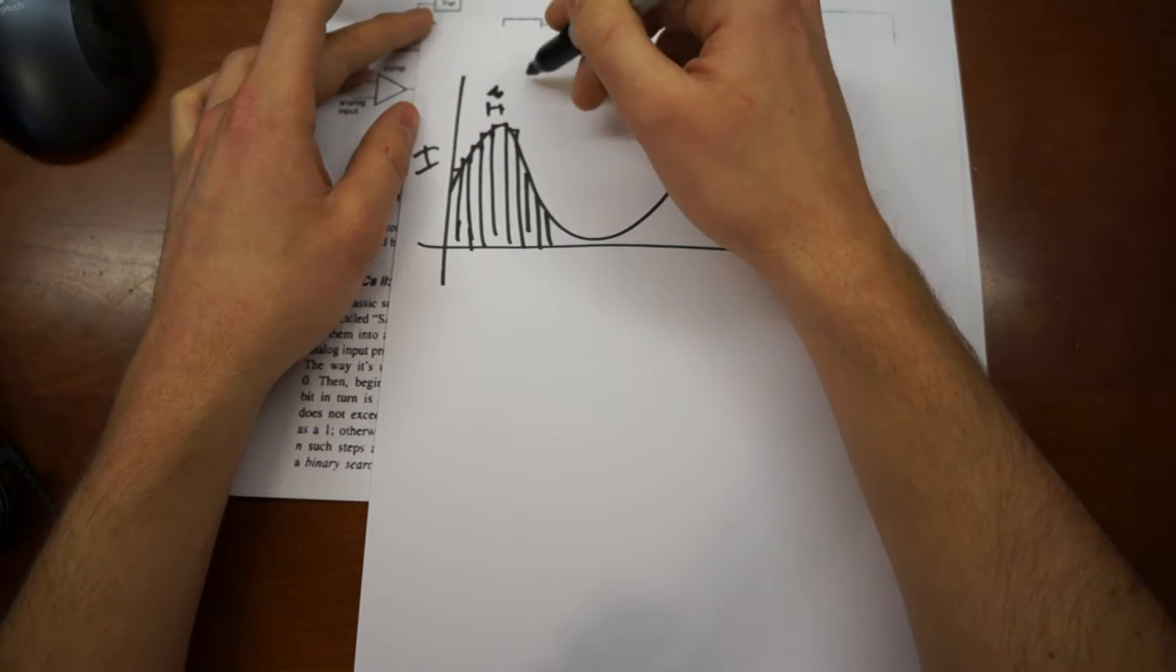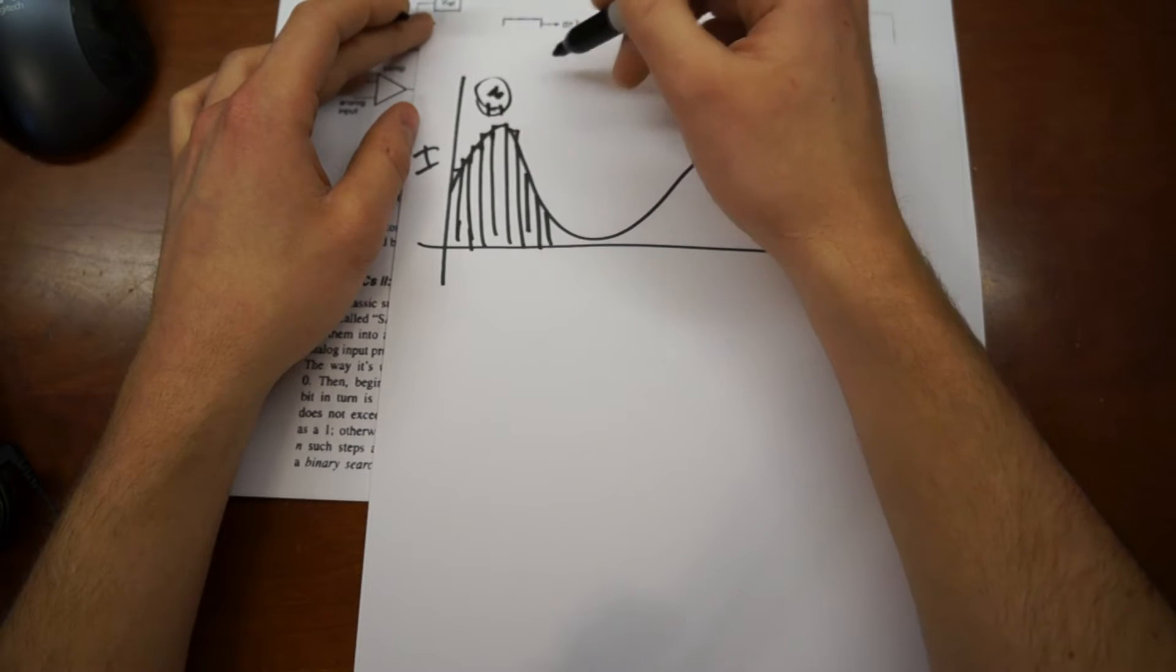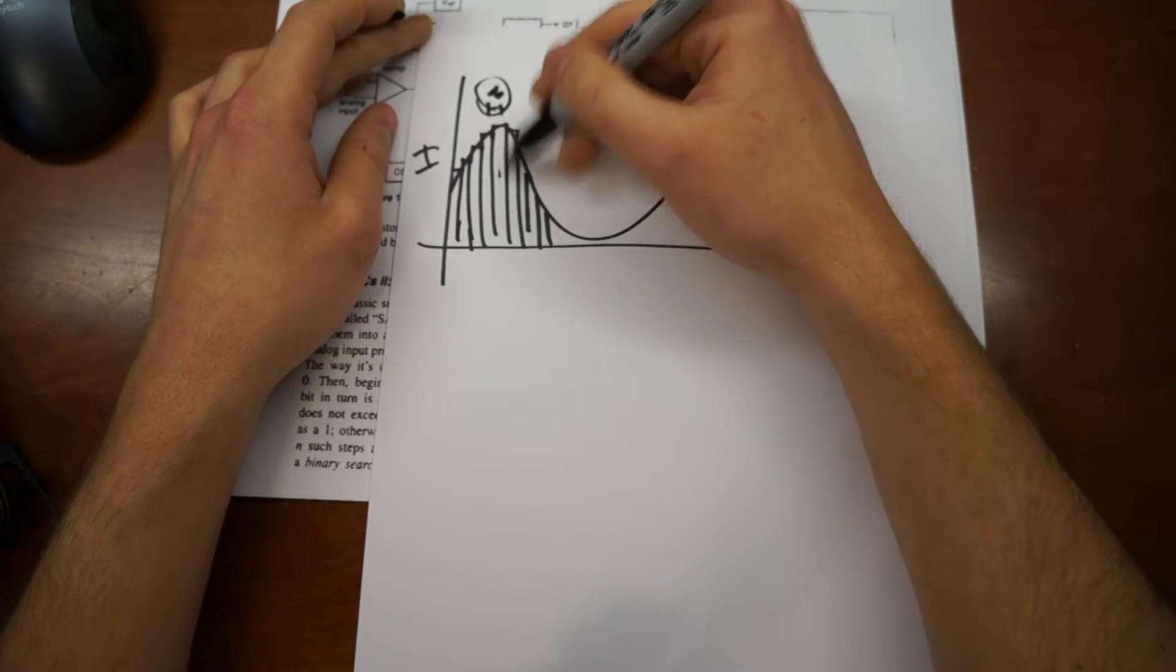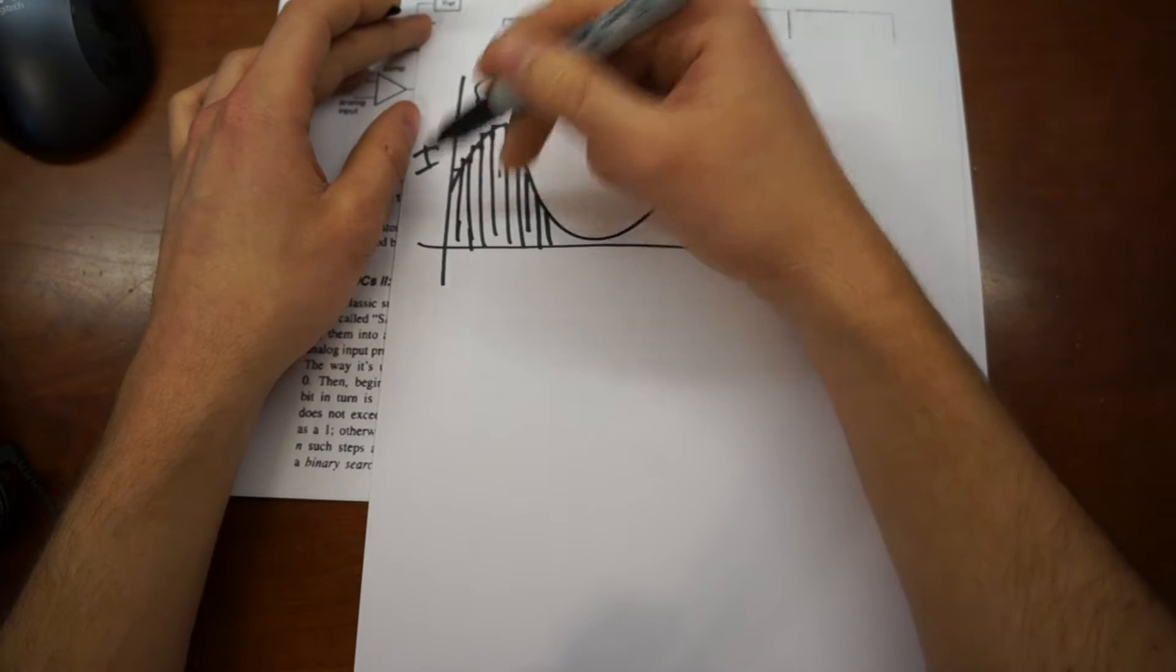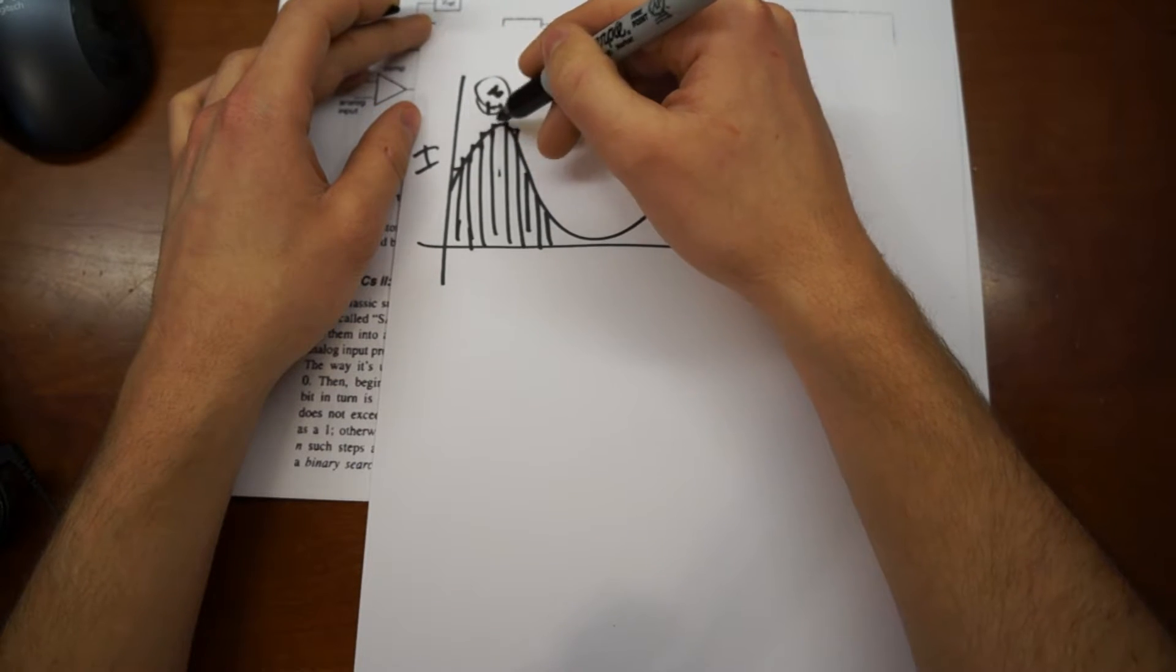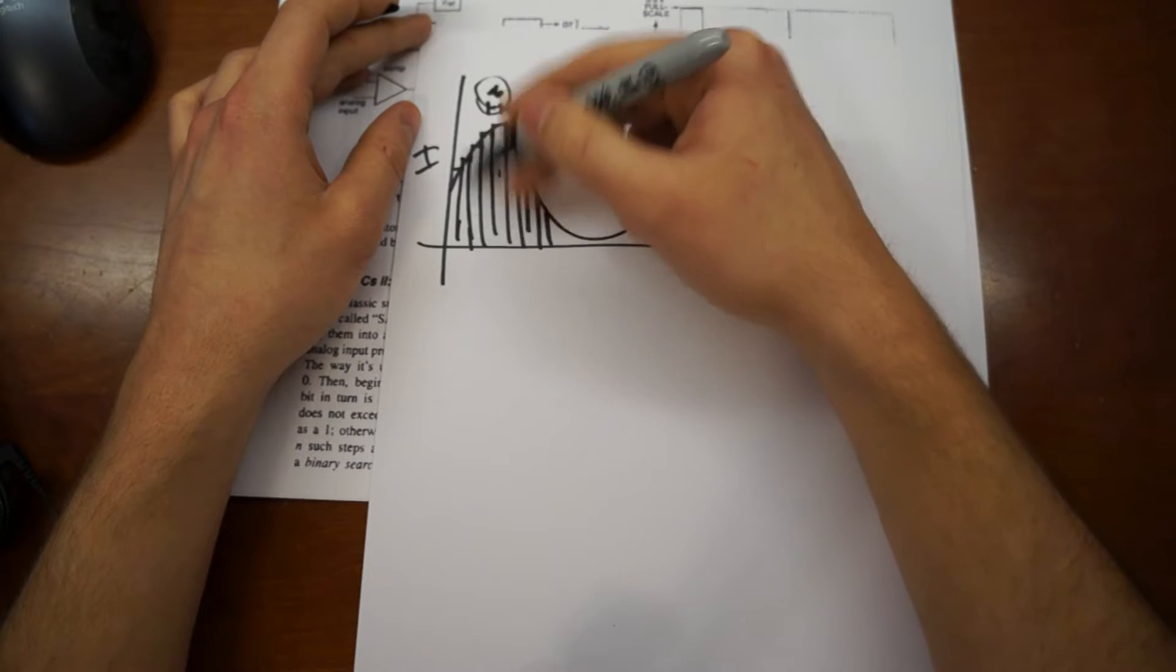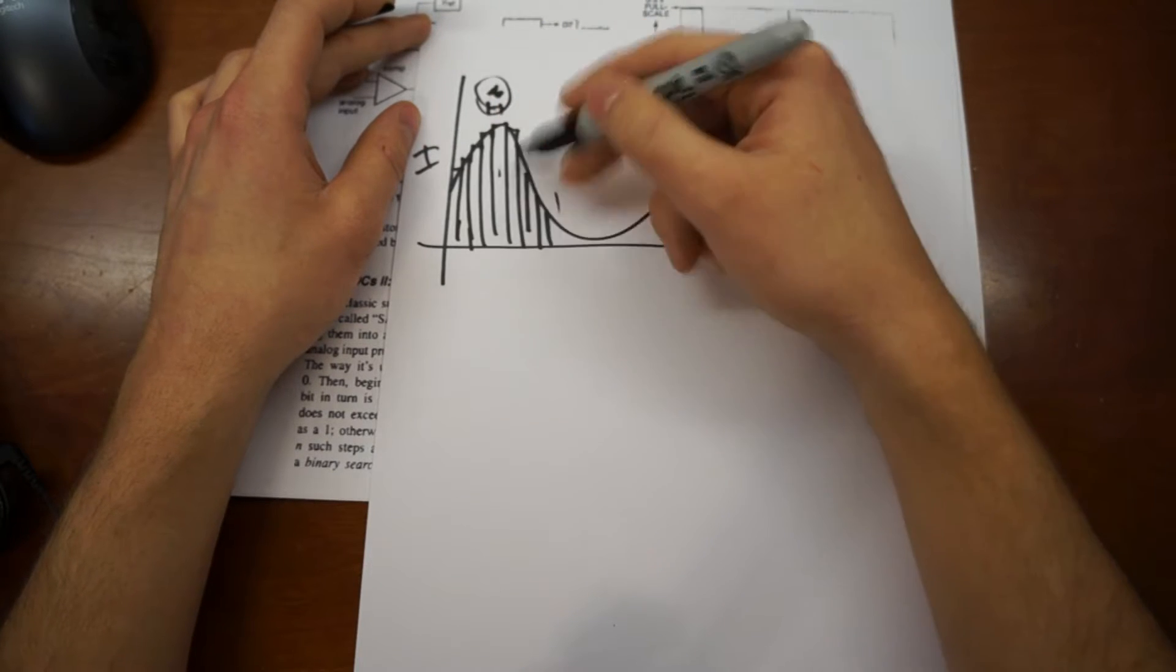So frequency goes like the inverse of the period in between these samples. And also, the quality is dependent on how small these steps can be. So the computer's going to chop the signal up into little tiny pieces.